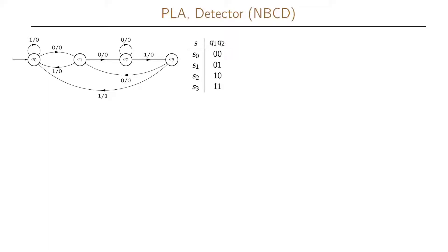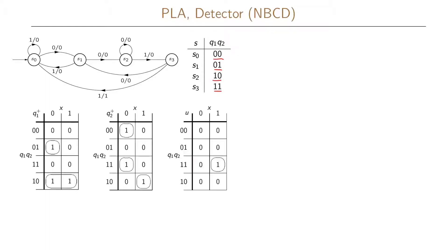For NBCD coding: S0=00, S1=01, S2=10, S3=11. We then make the Karnaugh maps for our next state variables Q1+ and Q2+, and also for our output function. We can see quite a few implicants in our Karnaugh maps.